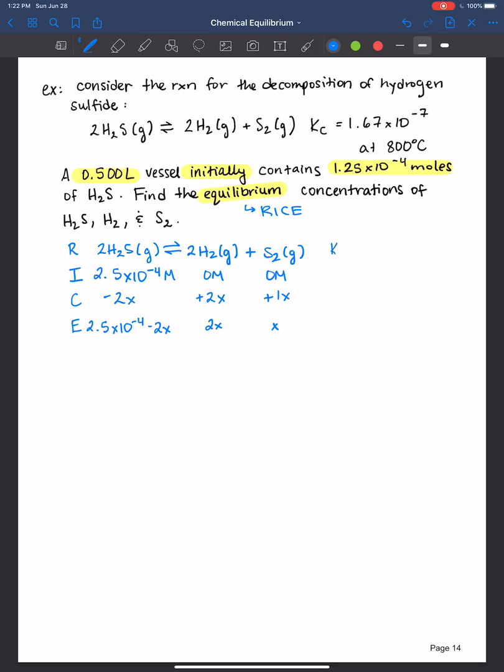Products over reactants. Hydrogen gas to what power? Squared times sulfur to the first power, over hydrogen sulfide to the second power. Make sure you don't forget those superscripts there from the balanced chemical equation. Remember that these are always in equilibrium. If we're talking about the equilibrium constant, we only want equilibrium concentrations plugged in there.